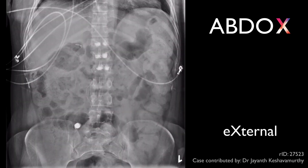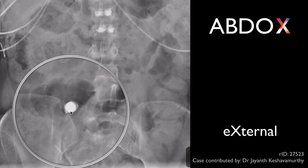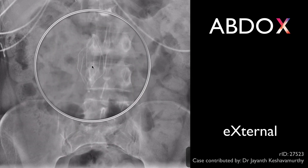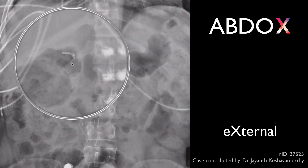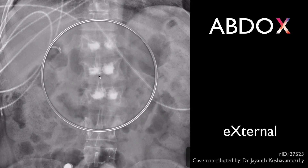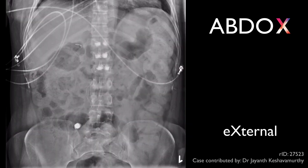X is for external objects, foreign bodies, lines, and tubes. Several such items can be seen here. This rounded object is a capsule endoscope within the small bowel. This is an IVC filter. These are cholecystectomy clips. These areas of high density indicate cement within vertebral bodies from a previous vertebroplasty. And these are cardiac monitoring leads.